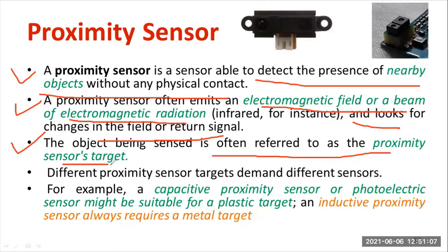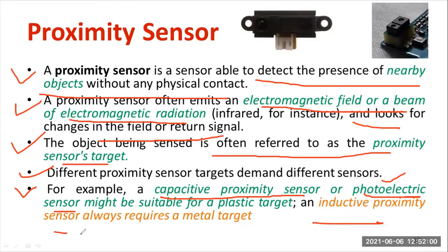Different proximity sensor targets demand different sensors; it varies depending on the requirement and what type of object you want to sense. It may be a metal object or a non-metal object. These sensors are most popularly used for sensing metal objects. Capacitive type proximity sensors are majorly used for identifying non-metal objects such as plastic, and photoelectric proximity sensors also detect non-metal objects. Inductive type proximity sensors are always used for identifying metal objects.